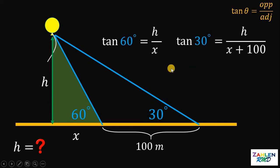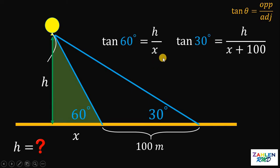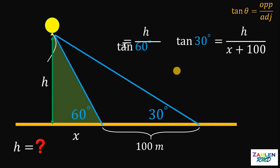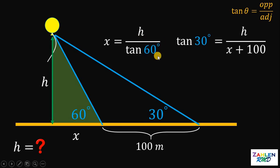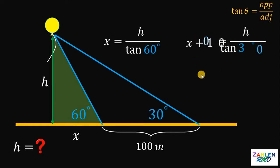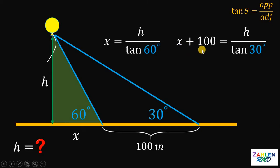Our goal is to solve for the value of h. To do that, let's solve first for the value of x in terms of h. On the first equation, tangent 60° = h/x, so x = h / tan(60°). On the second equation, if we cross-multiply, we get x + 100 = h / tan(30°).